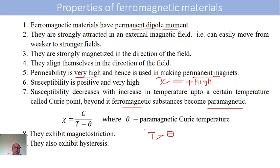A special property possessed by ferromagnetic materials is magnetostriction — when subjected to an external magnetic field, the ferromagnetic material experiences a change in shape and size; it will be either squeezed or expanded, with change in size, shape, and volume. They also exhibit hysteresis: when subjected to a cycle of magnetization, there is a leading and lagging of B and H over a cycle of operations, which is called hysteresis.